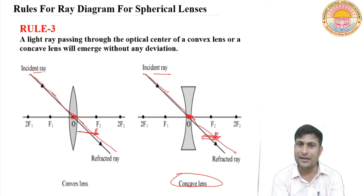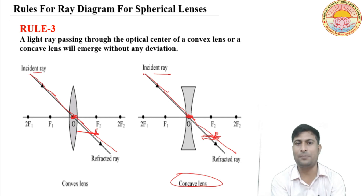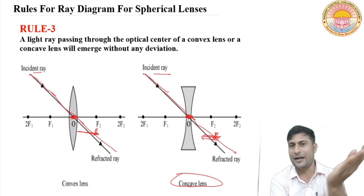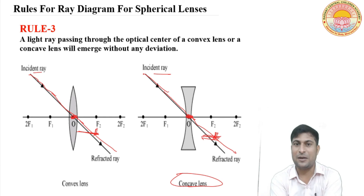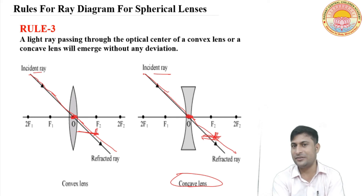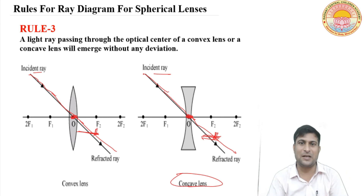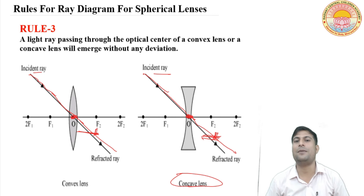This is the third and last rule. Let's recall once again. First rule: if a light ray is parallel to the principal axis, then after refraction it will pass through the principal focus or be directed towards the principal focus. Second rule: if a light ray is passing through the principal focus or directed towards the principal focus, then after refraction it will be parallel to the principal axis. Third rule: if a light ray is passing through the optical center of a spherical lens, then it will pass without any deviation. These are the three rules for the lens case.